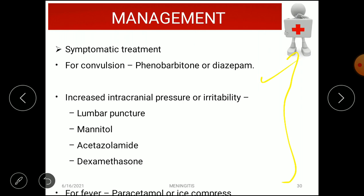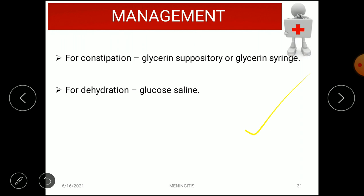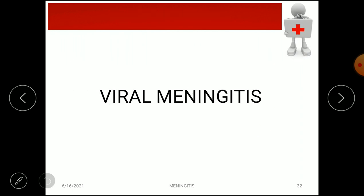Symptomatic treatment includes anti-convulsant drugs such as phenobarbitone or diazepam for convulsions. For increased intracranial pressure or irritability, lumbar puncture or drugs like mannitol, acetazolamide, or dexamethasone can be given. Paracetamol or ice compress for fever, glycerin suppository or glycerin syringe for constipation, and glucose saline for dehydration to maintain adequate hydration.